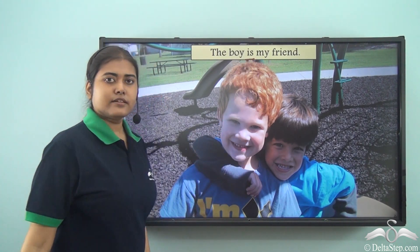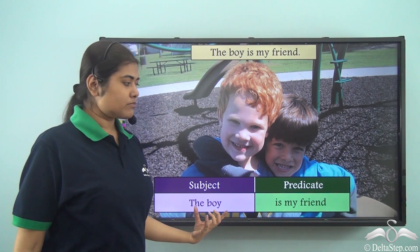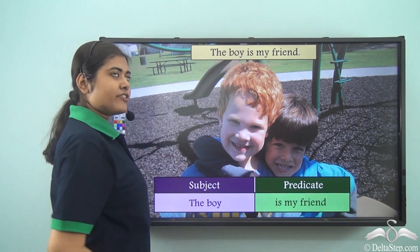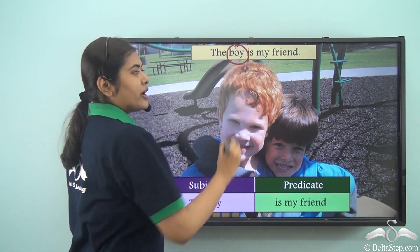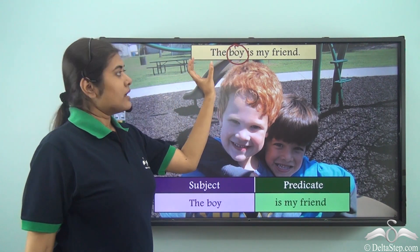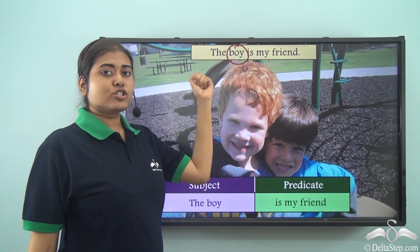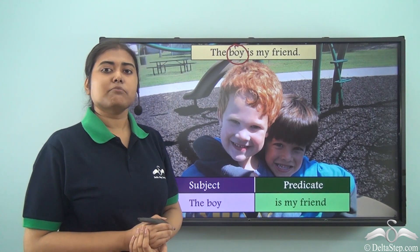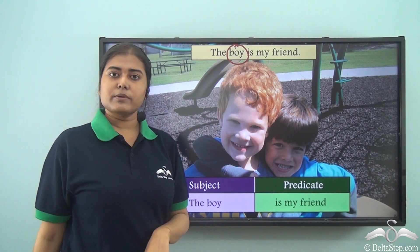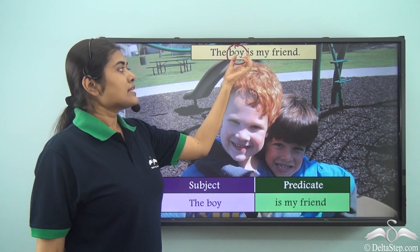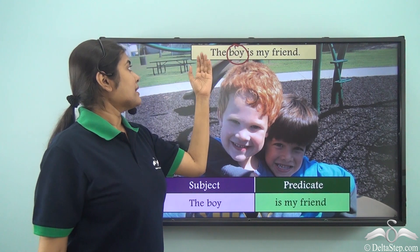Look at this sentence: 'The boy is my friend.' The verb is 'is.' Who is my friend? It is the boy. So 'the boy' is the subject and 'is my friend' is the predicate. We include the article 'the' because it is modifying the noun 'boy.' Whatever modifies a noun in the subject position must be included within the subject. Note that 'friend' is also a noun here, but it is not the subject because the verb 'is' is not performed by 'friend' — it is performed by 'boy.'